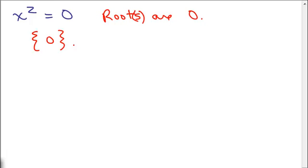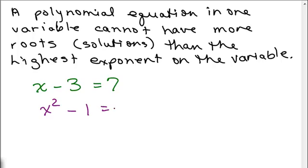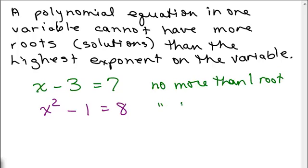Whatever the highest exponent is on the variable, that tells you the most number of roots you can have. A polynomial equation in one variable cannot have more roots — remember, roots are just solutions — than the highest exponent on the variable. So a linear equation like X minus 3 equals 7 has no more than one solution, and a quadratic like X squared minus 1 equals 8 has no more than two solutions.